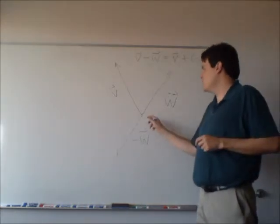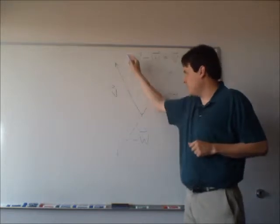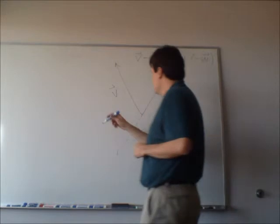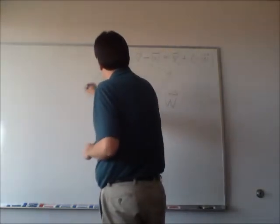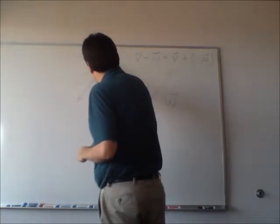But if I want to add it to V, I'm going to go ahead and take this vector and start it at the end of V, because I'm going to travel along V and then travel in the same direction as this vector in the same length, but starting at this point. Okay, that's a pretty good approximation there. So this is negative W.